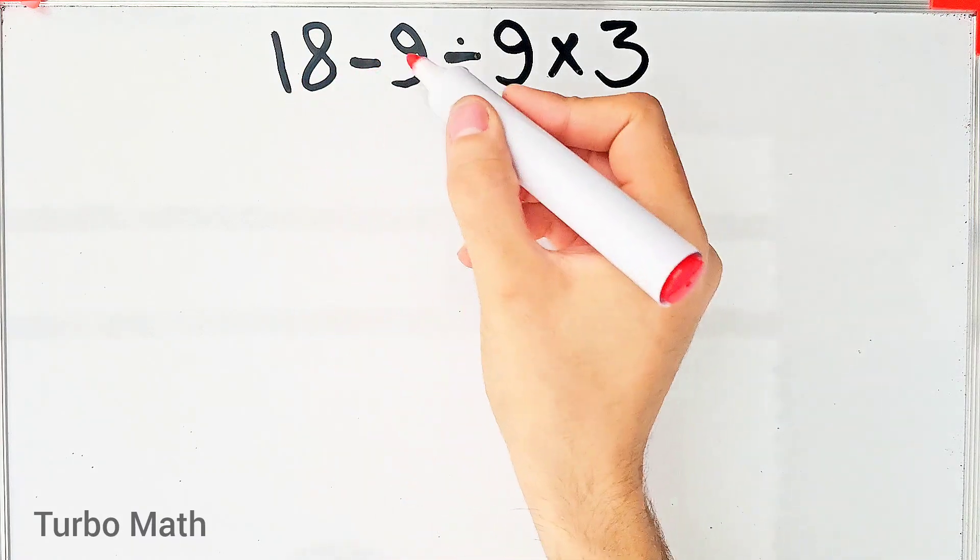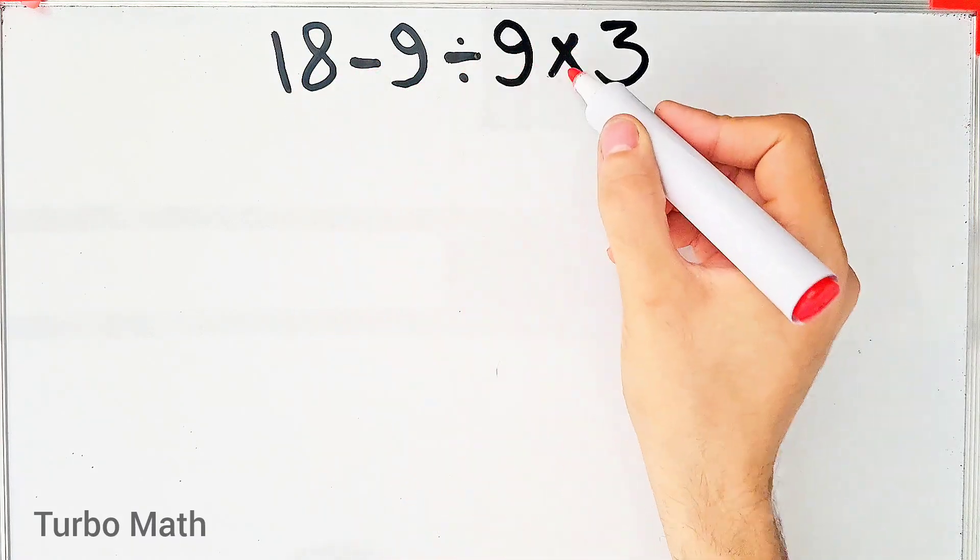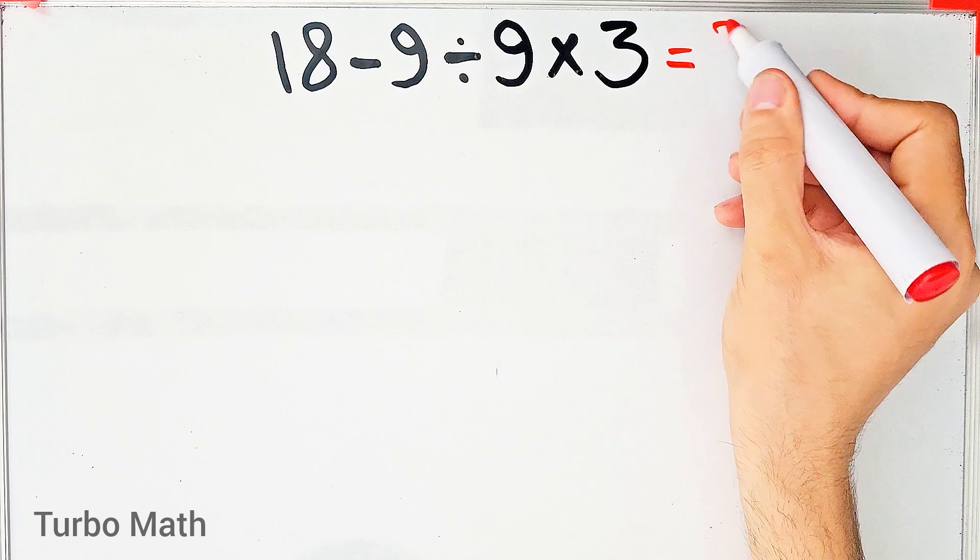18 minus 9 divided by 9 then times 3. What is the answer of this question? Can you solve it?